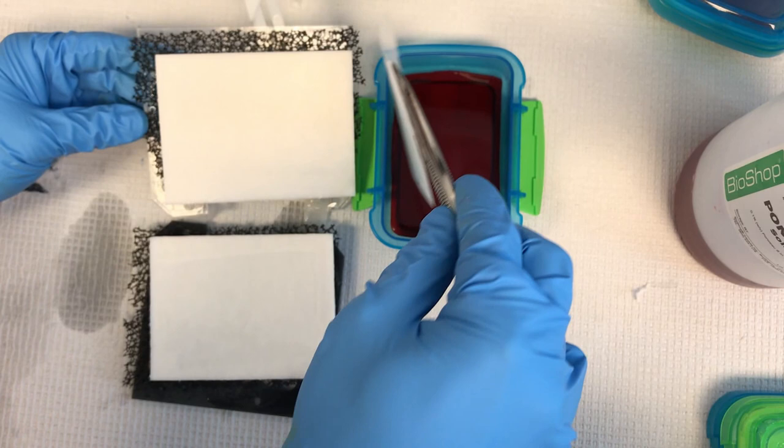Soak the membrane in Ponceau Red solution for 7 minutes at room temperature on a shaker.